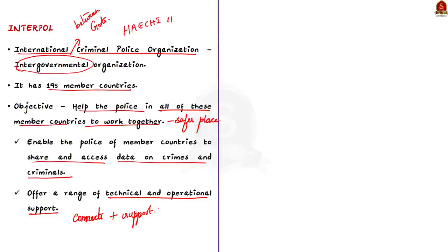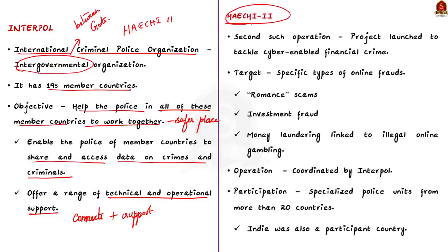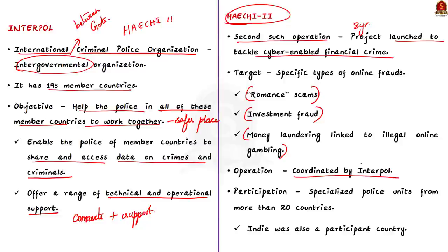Coming back to Operation HE2: it is one such operation providing technical and operational support. It is the second operation in a three-year project launched to tackle cyber-enabled financial crime. In this exercise, the police units targeted specific types of online frauds such as romance scams, investment fraud, and money laundering linked to illegal online gambling. The operation, coordinated by Interpol, was conducted over four months from June to September. Specialized police units from more than 20 countries took part, and notably India was also a participant country.